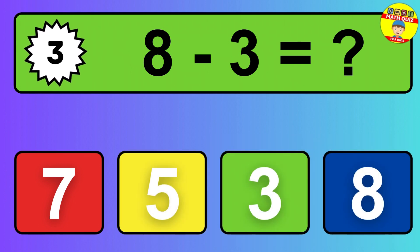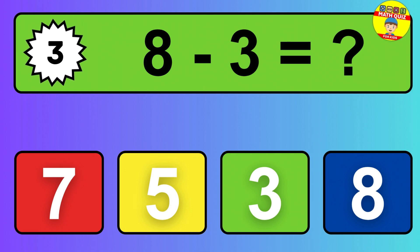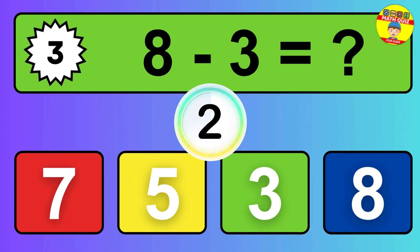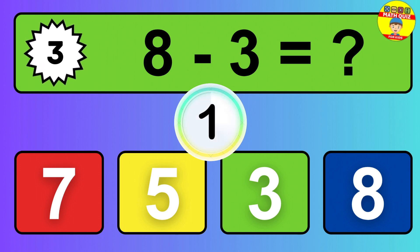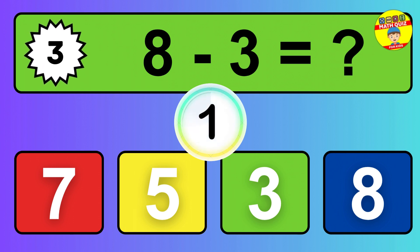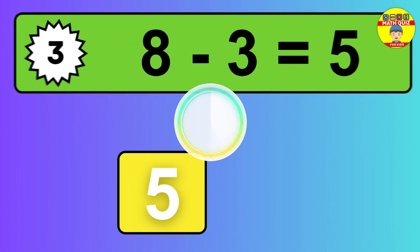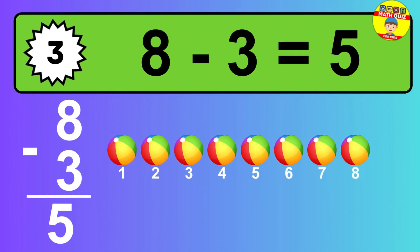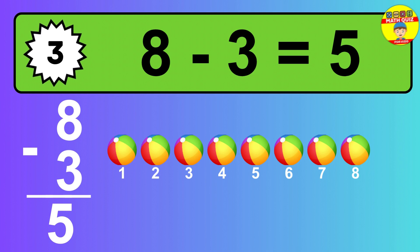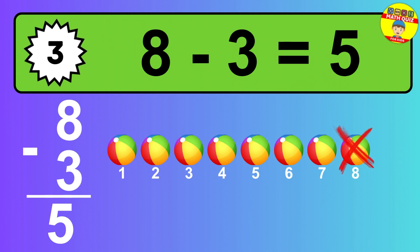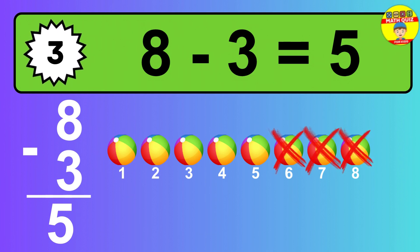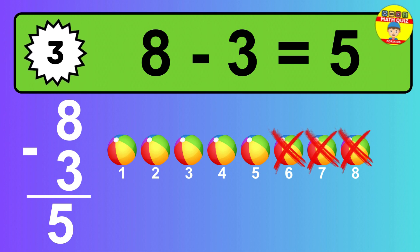Question 3. 8 minus 3 equals what? The answer is 8 minus 3 is 5. Let's count it. 1, 2, 3, 4, 5.